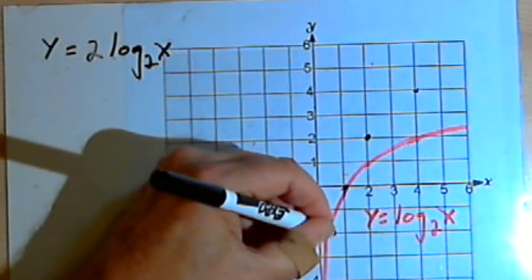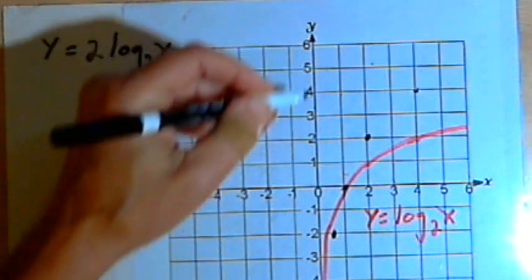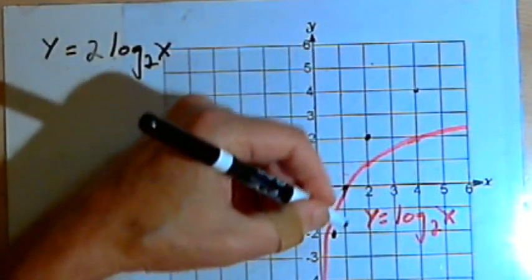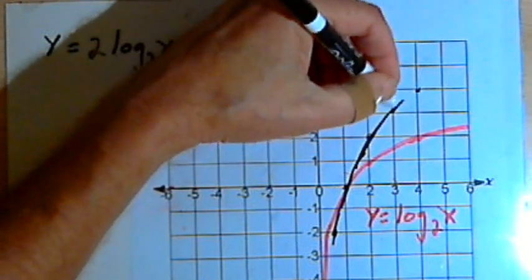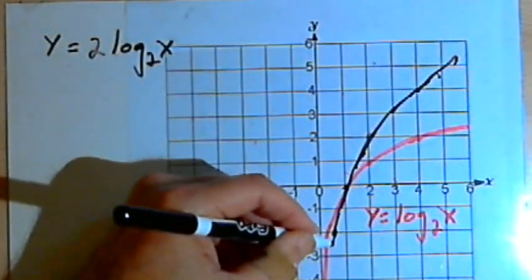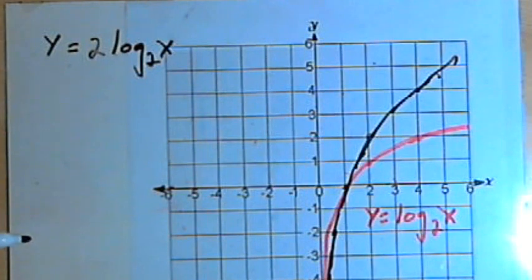I have to go down to (1/2,-1) which becomes (1/2,-2). The vertical asymptote stays the same. And if I sketch the graph in, we can see that it's stretched out vertically by a factor of 2.